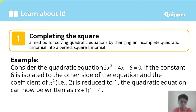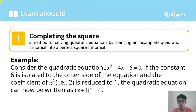Consider the quadratic equation 2x² + 4x − 6 = 0. If the constant 6 is isolated to the other side and the coefficient of x², which is 2, is reduced to 1, the quadratic equation can now be written as (x + 1)² = 4.